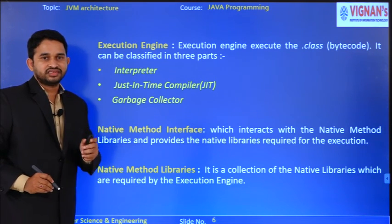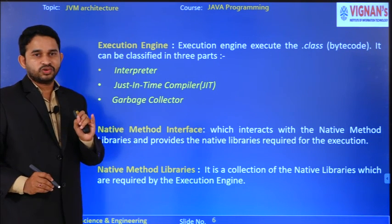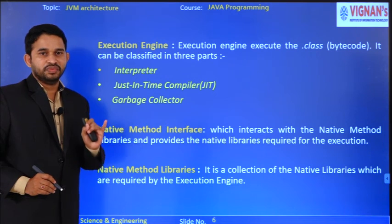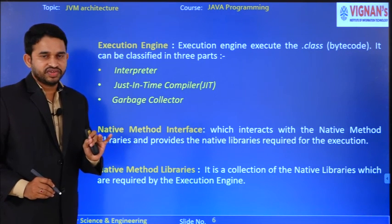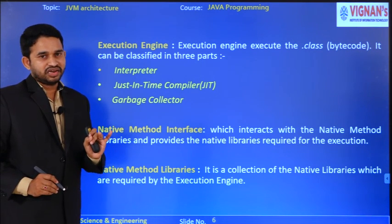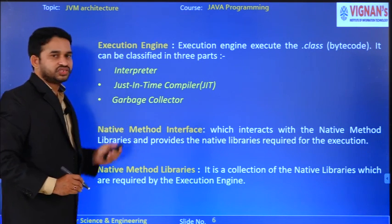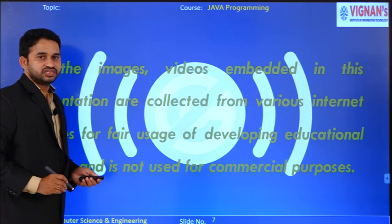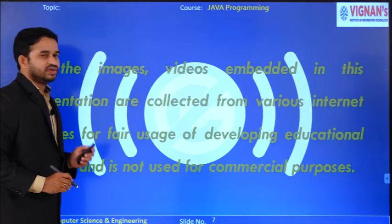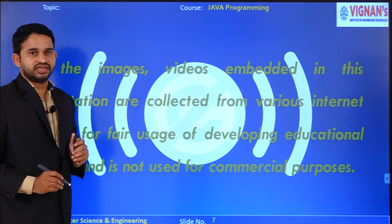Our entire JVM architecture contains three parts: class loader subsystem, memory area (also called runtime memory area), and execution engine. This is the JVM architecture. Thank you.